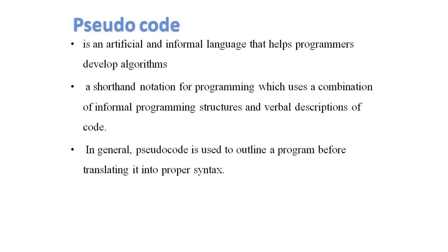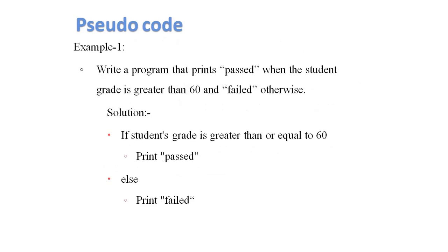For example, write a program that prints 'pass' when the student grade is greater than or equal to 16, and 'fail' otherwise. In pseudocode: if the student grade is greater than or equal to 16, print pass; else print fail.